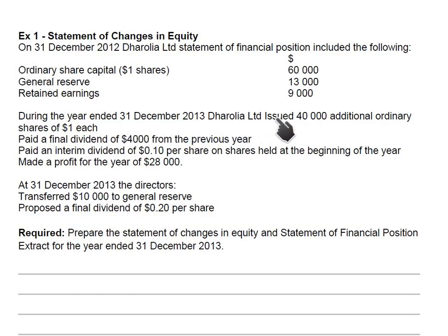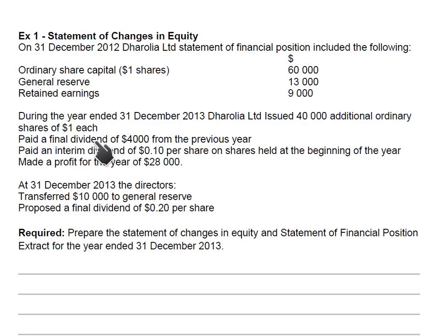During the year 2013, Dharolia Limited issued 40,000 additional ordinary shares of $1 each, meaning shareholders invested more money into the business. The company also paid a final dividend of $4,000 from the previous year. Dividend is the return the company pays to its shareholders. There are two types: interim dividend, paid during the year, and final dividend, paid at the end of the year.